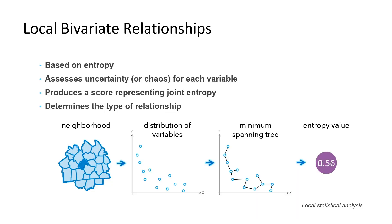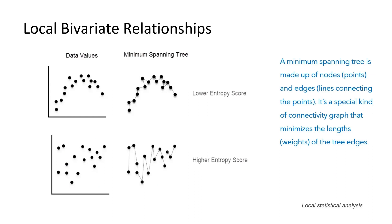The Local Bivariate Relationships tool uses entropy to quantify relationships. Entropy is a fundamental concept of information theory. The tool works by approximating the amount of uncertainty, or entropy, in the values of both variables within a particular spatial neighborhood. If the relationship is statistically significant, a second step determines which type — linear, quadratic, or complex — best fits the data. To quantify mutual information shared by two variables in a neighborhood, the tool linearly normalizes each variable to get them on the same scale, then creates a minimum spanning tree and computes a score reflecting their joint entropy. When two variables are strongly related, their joint entropy score will be low.